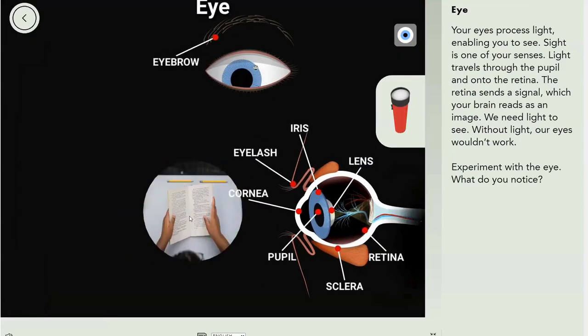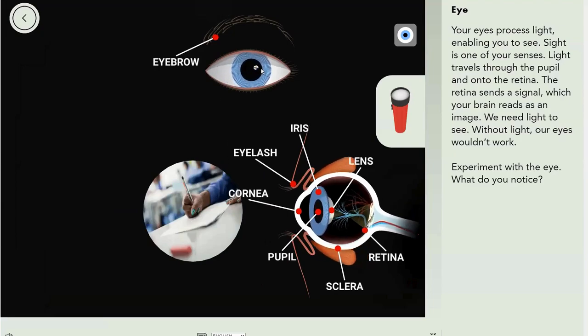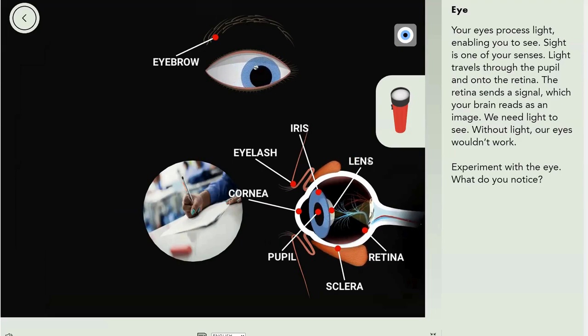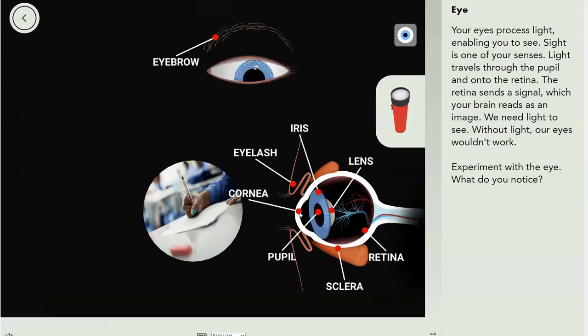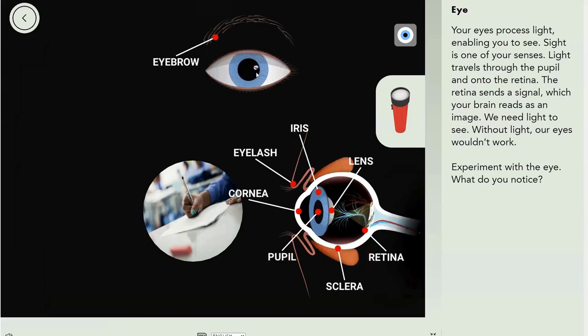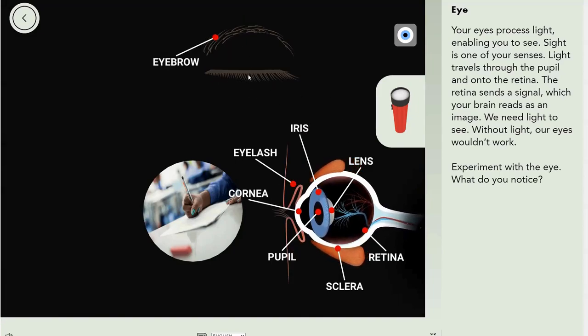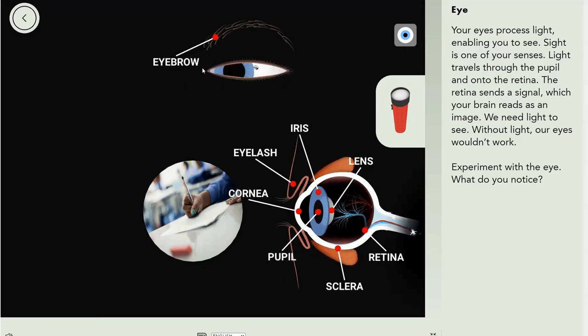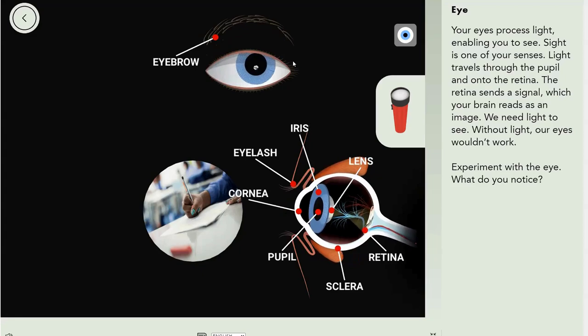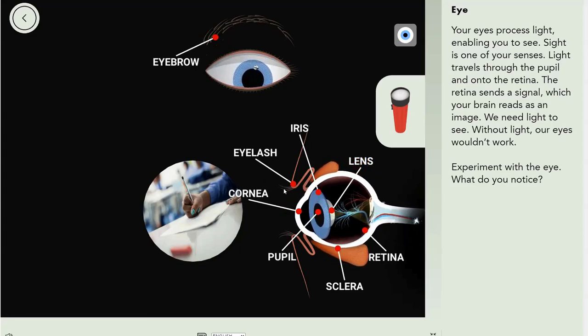What about your eyes? Seems like they're really important. But this is creepy. Let's investigate. So this is your eyebrow. Everyone knows it. This is your eyelash. This here is your cornea. That is your iris. That hole in there is your pupil. Yes, the pupil is a hole.